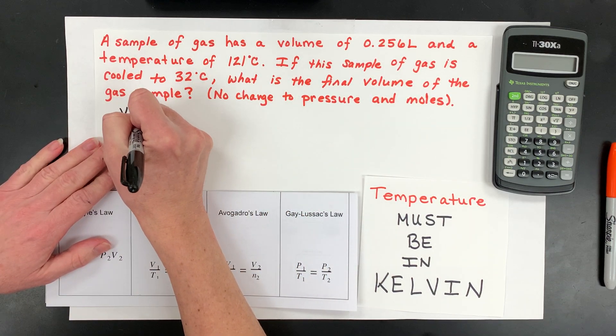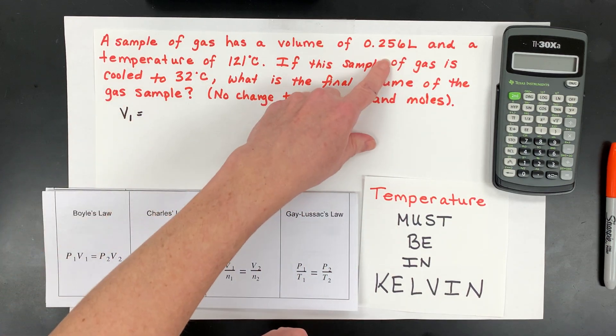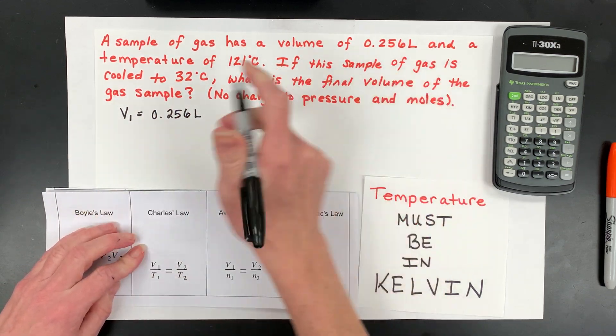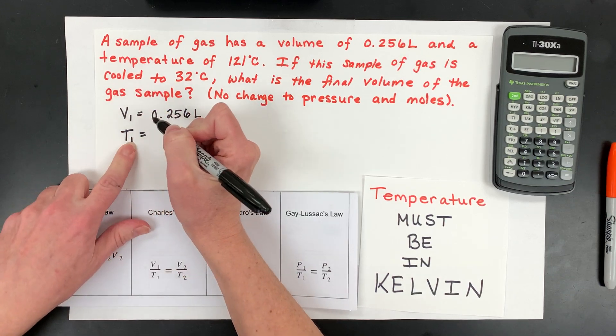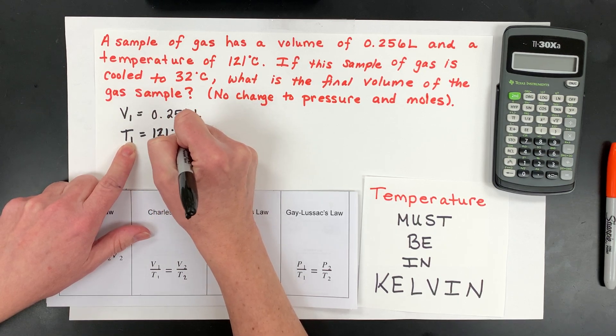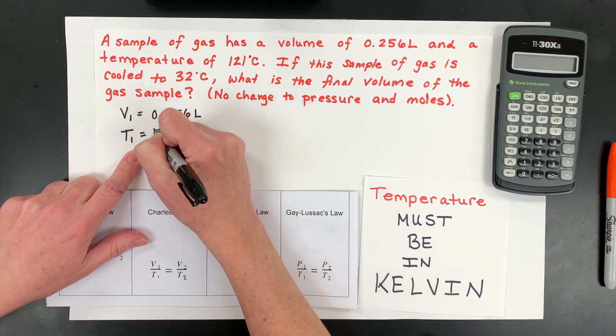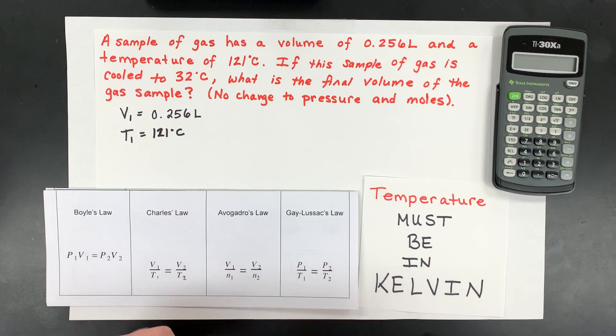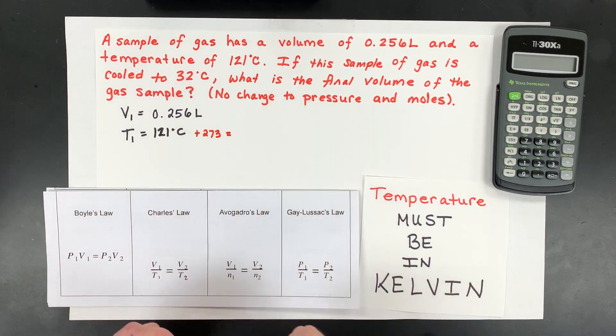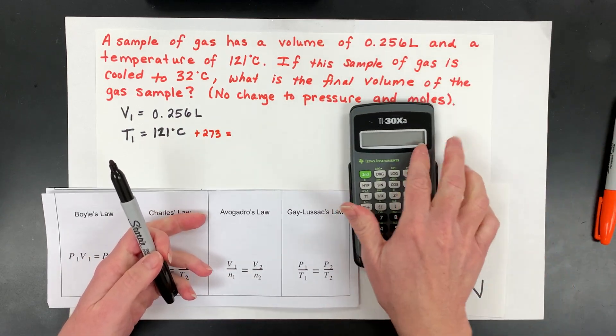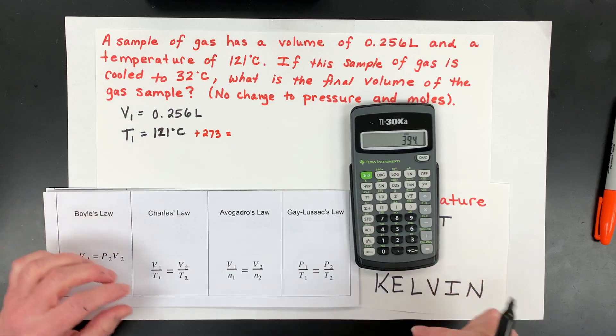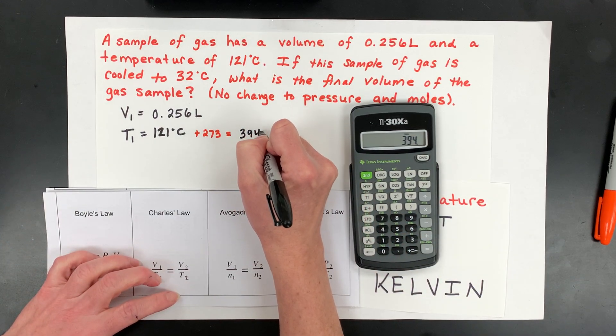We've got a sample of gas that starts out at an original volume of 0.256 liters. And the initial temperature, sometimes they use little i's here, I like to use one, was 121 degrees Celsius. So 121, now I need that in Kelvin. I'm going to add in 273 to convert this into Kelvin. So you take your 121 plus 273, you could use 273.15, and we get 394 Kelvin.